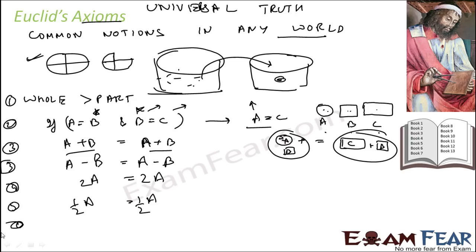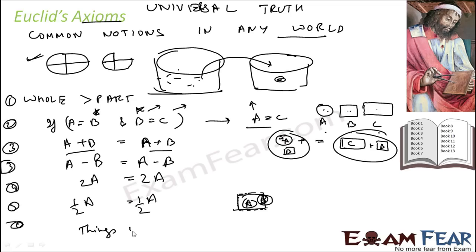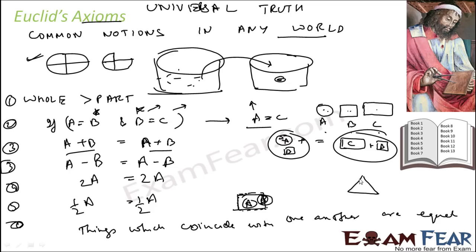Things which coincide with one another are equal. For example, if one square coincides with another square — square A is totally coinciding with square B — that means the area of A equals the area of B. The same applies with triangles: if another triangle exactly coincides with a given triangle, both triangles have the same area. They are the same.